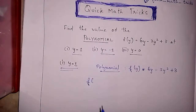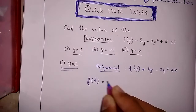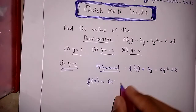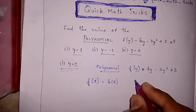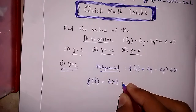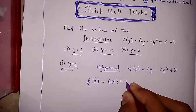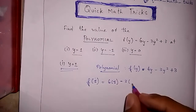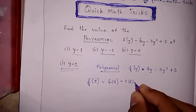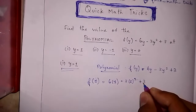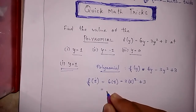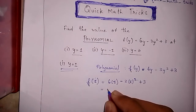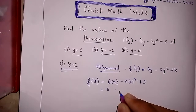The y value is 1, so we write f(1) is equal to 6 times 1 minus 3 times 1 squared plus 3.